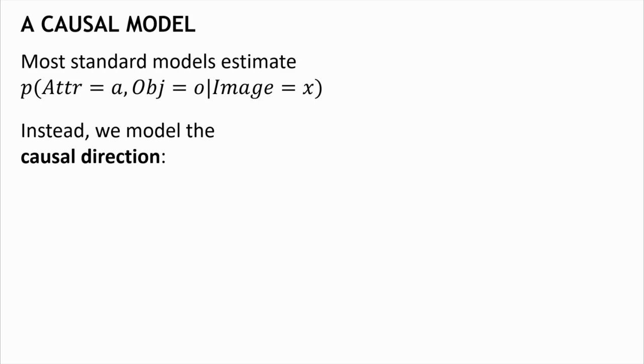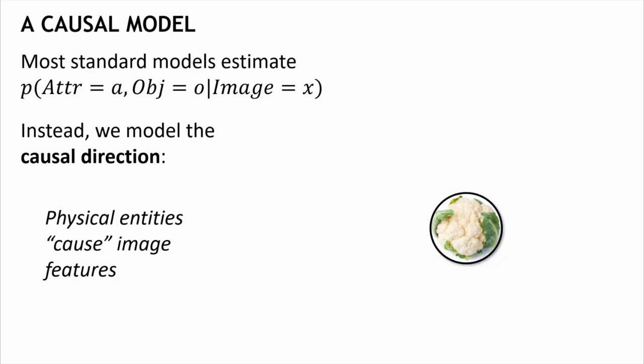So what is the causal mechanism that generates images in the world? You can think that this image is actually a recording of something that happened in real life. There are some physical whiteness and cauliflower-ness in the world that cause this image.